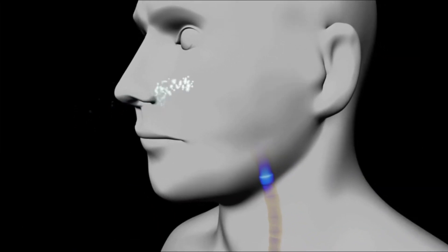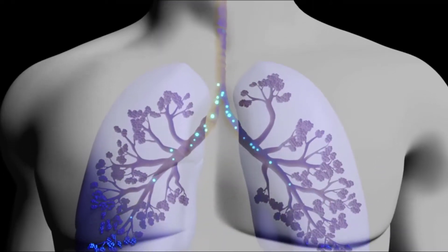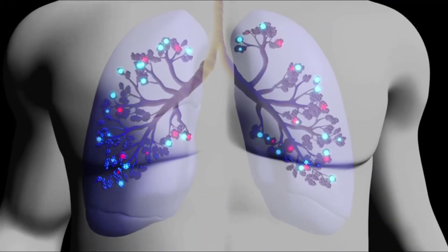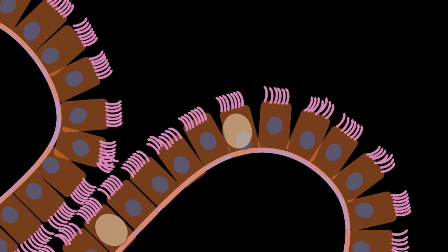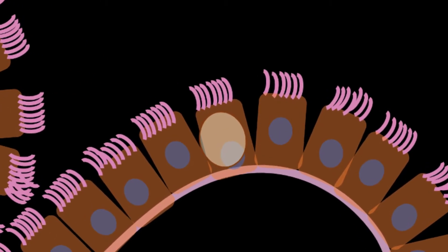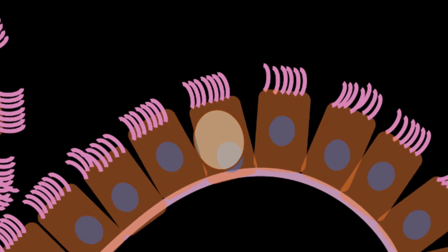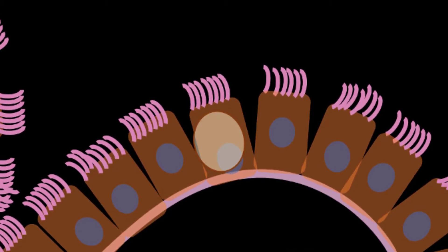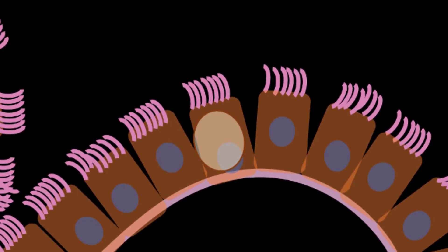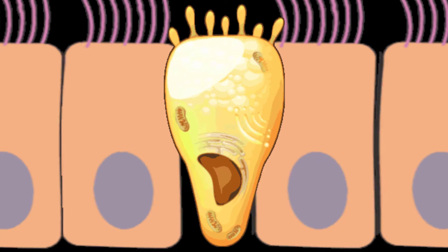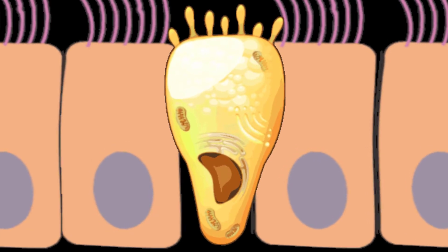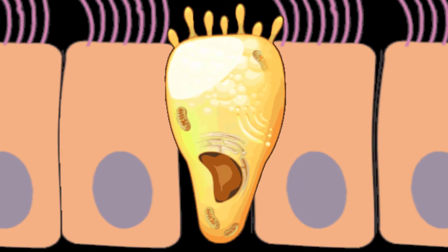Pseudostratified columnar epithelium is found in the respiratory tract where some of the cells have cilia. Both simple and pseudostratified columnar epithelia are heterogeneous epithelia because they include additional types of cells interspersed among epithelial cells. For example, a goblet cell is a mucus-secreting unicellular gland interspersed between the columnar epithelial cells of mucous membranes.